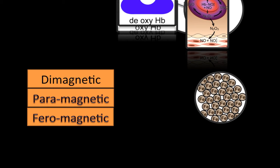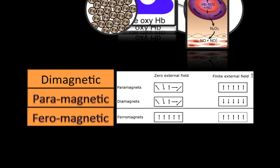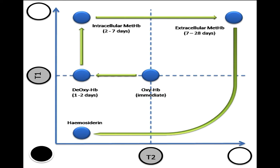Ferromagnetics are very special substances strongly influenced by the external magnetic field. In this table you will see the different magnetic field directions for paramagnetics, diamagnetics, and ferromagnetic substances. The ferromagnets are strongly aligned according to the external magnetic field, but diamagnetics are not — they are actually opposed to the existing external magnetic field.